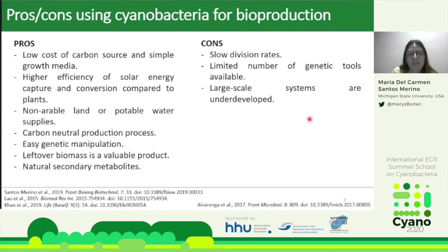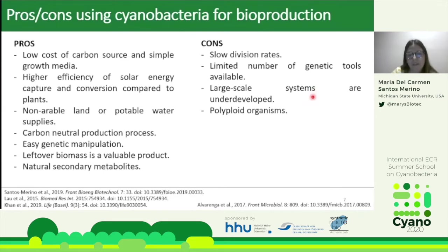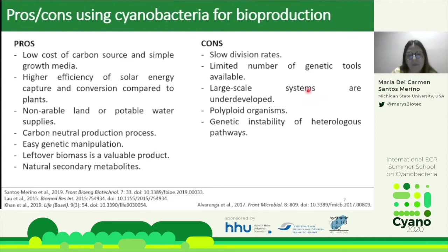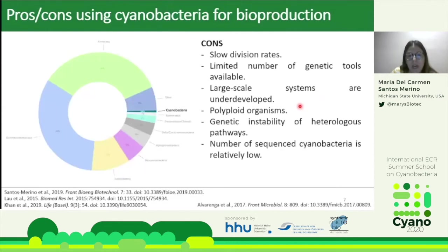For large-scale production, we need to develop suitable systems. Cyanobacteria are polyploid organisms, and when we introduce a chromosomal modification we need to ensure all copies contain it, making the segregation process longer than normal. This also produces genetic instability of the introduced pathway. Compared with other prokaryotes, the number of sequenced cyanobacterial genomes is relatively low, as shown in the graph.